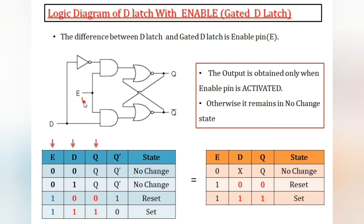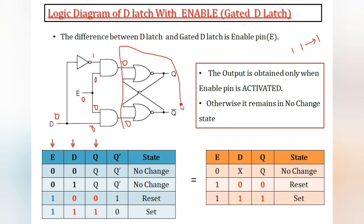First, taking enable = 0 and D = 0. Zero is here, zero inverted gives one. For an AND gate, two inputs must be 1 for the output to be 1; all other conditions result in zero. So 1 and 0 to AND gate results zero, 0 and 0 results zero. SR latch with 0, 0 inputs results in no-change condition. So if enable is 0, the output is no change.